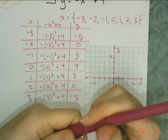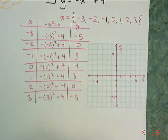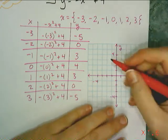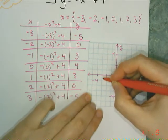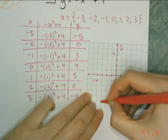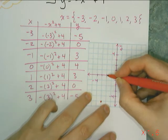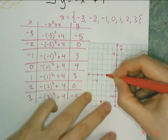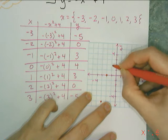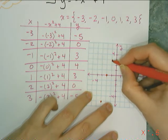So now it's time for me to plot the points. I'm going to plot them in red. So I go to negative 3, and I need to plot the point negative 5, which is down here. And negative 2, I need to plot the point that's 0. And then at 1, I need to plot 3. And at 4, I should plot 0.